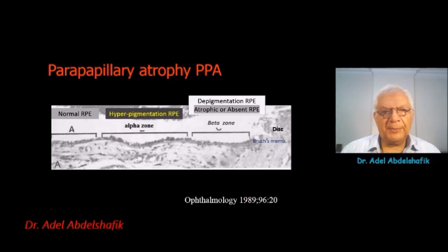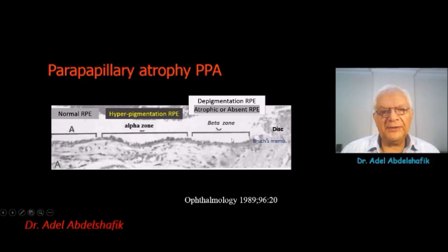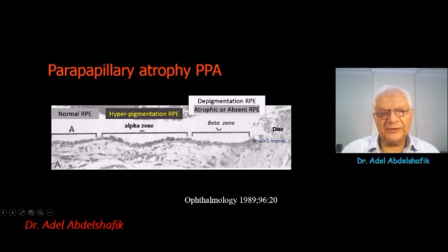What about the peripapillary atrophy? We have what's known as alpha zone and beta zone. Alpha zone is a zone of hyperpigmentation of the retinal pigment epithelium, while beta zone is a zone of irregular pigmentation of the retinal pigment epithelium. Then we have the disc.